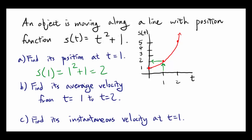Now let's find the average velocity from t equals 1 to t equals 2. Average velocity is defined as displacement over change in time. Displacement is the change in position, and change in time is just the change in time. So from time equals 1 to time equals 2, how much did your position change?